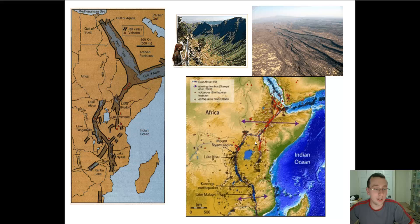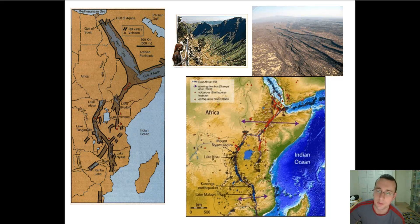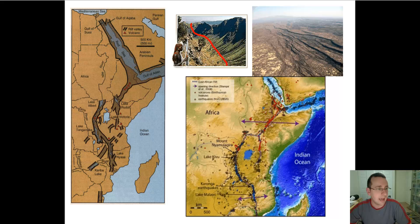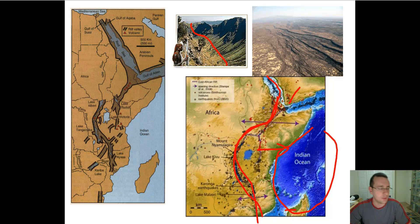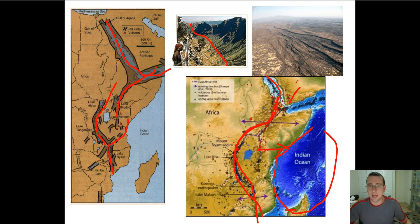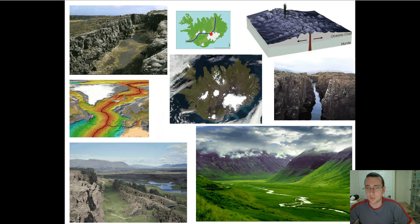Earthquakes sometimes happen far from boundaries. One reason might be a new boundary forming. For example, in Africa there is what we call a rift valley — a sequence of horsts and grabens. Africa is essentially shattering, with pieces of Eastern Africa becoming a new piece of crust shifting away from Africa, just like Arabia and Madagascar did, or India once did. A new ocean is growing, and the fault zone is extending all around the eastern African side, basically because of a rift.